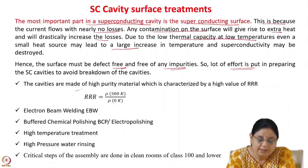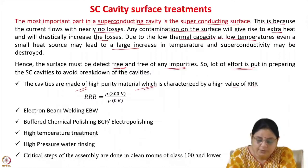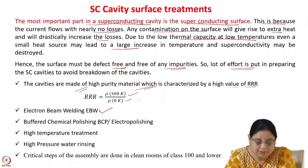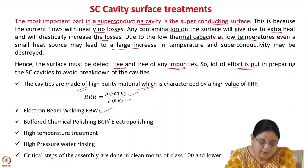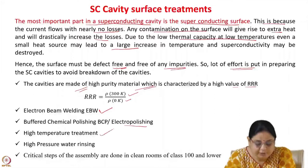The cavity is made from very high purity material characterized by a high value of RRR, the residual resistivity ratio, given by resistivity at 300 K divided by resistivity at 0 K. Processes like electron beam welding are used for fabrication. Buffered chemical polishing or electropolishing techniques are used for maintaining the cavity surface, along with high-temperature treatment for removing impurities and high-pressure water rinsing with ultrapure water.